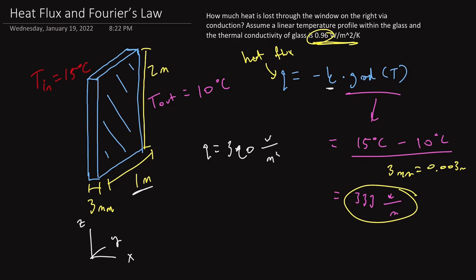And so one thing to be really careful of if we're solving this on an exam is that this value is not your final answer because we don't know how much total energy is actually moving out of our house right now because of this window. We need to multiply this by the area. So how much heat is lost is really equal to this big Q. And so big Q is equal to little q times the area of our glass. And area of our glass was 1 meter times 2 meters, which is equal to 2 square meters.